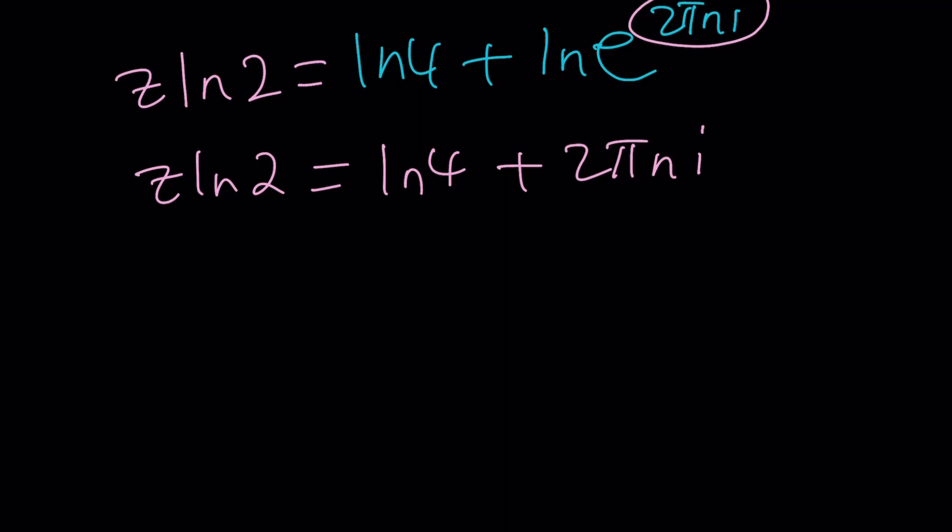Now, at this point, since you want to solve for z, it would make sense to divide everything by ln 2. Let's do it. z equals ln 4 over ln 2 plus 2 pi n divided by ln 2, and that is multiplied by i.